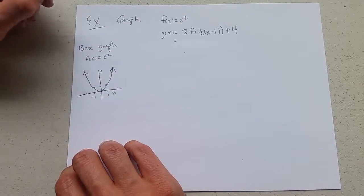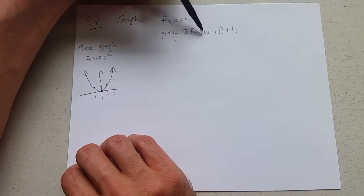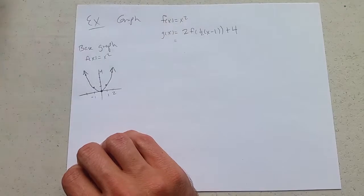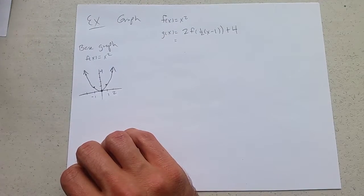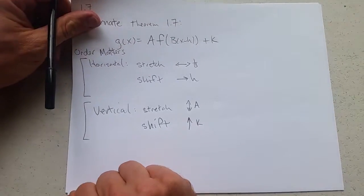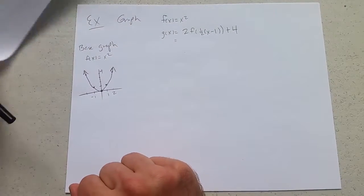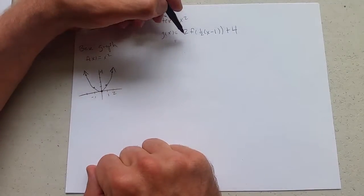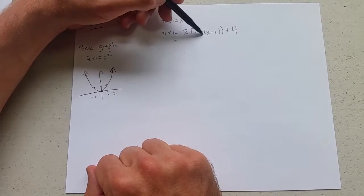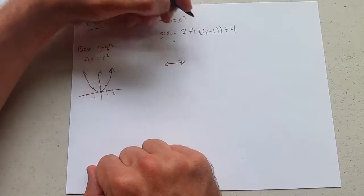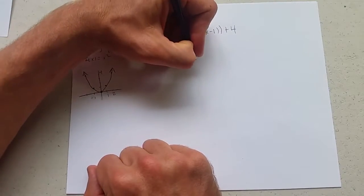So we get this parabola, this is our base graph. Now there are one, two, three, four transformations and we're going to apply them in order. Referencing our last slide, we had horizontal first: stretch, shift, vertical: stretch, shift. So what stretch do we have first? It looks like a half.